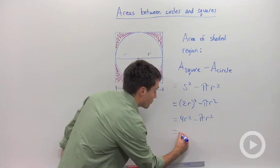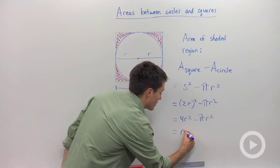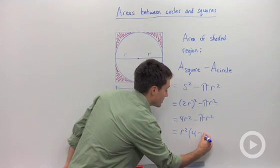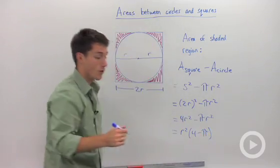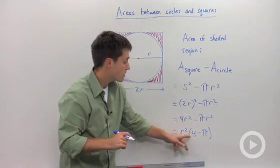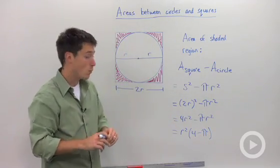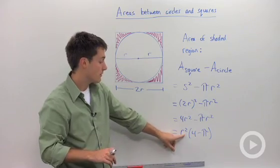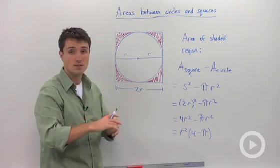Which could be rewritten if you factor out the r squared as r² times (4 - π). Where that's going to be a number that's going to be less than 1. So you see that you're going to have your radius times a number somewhat less than 1.